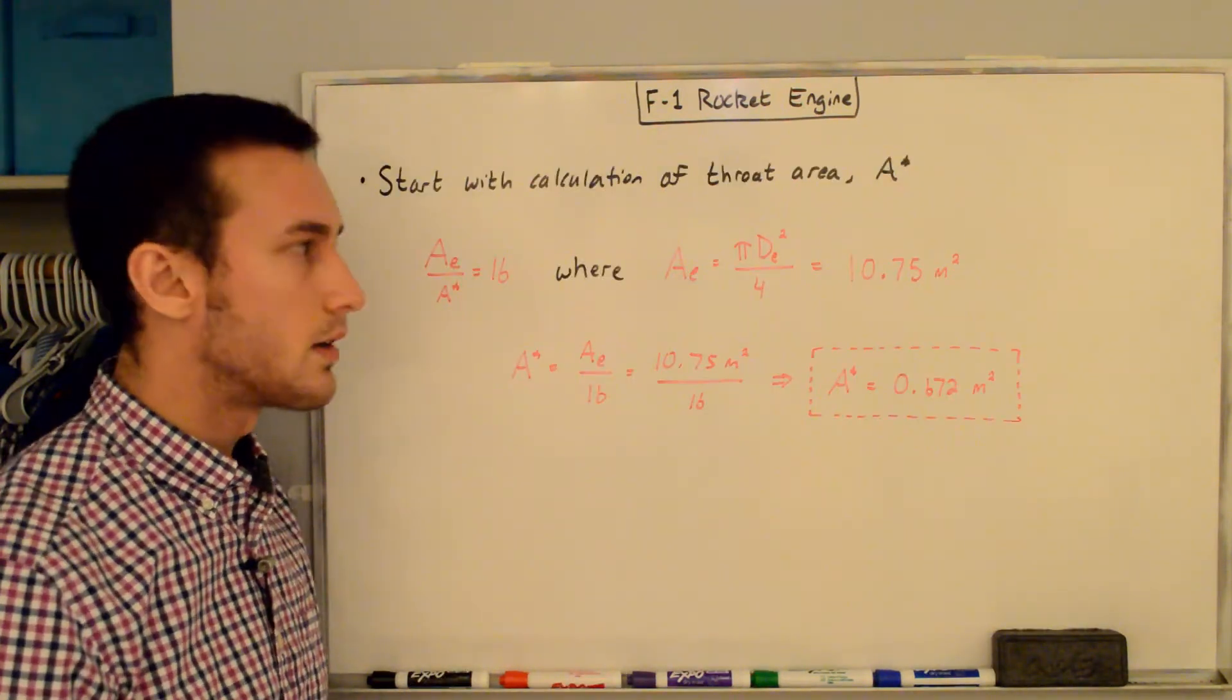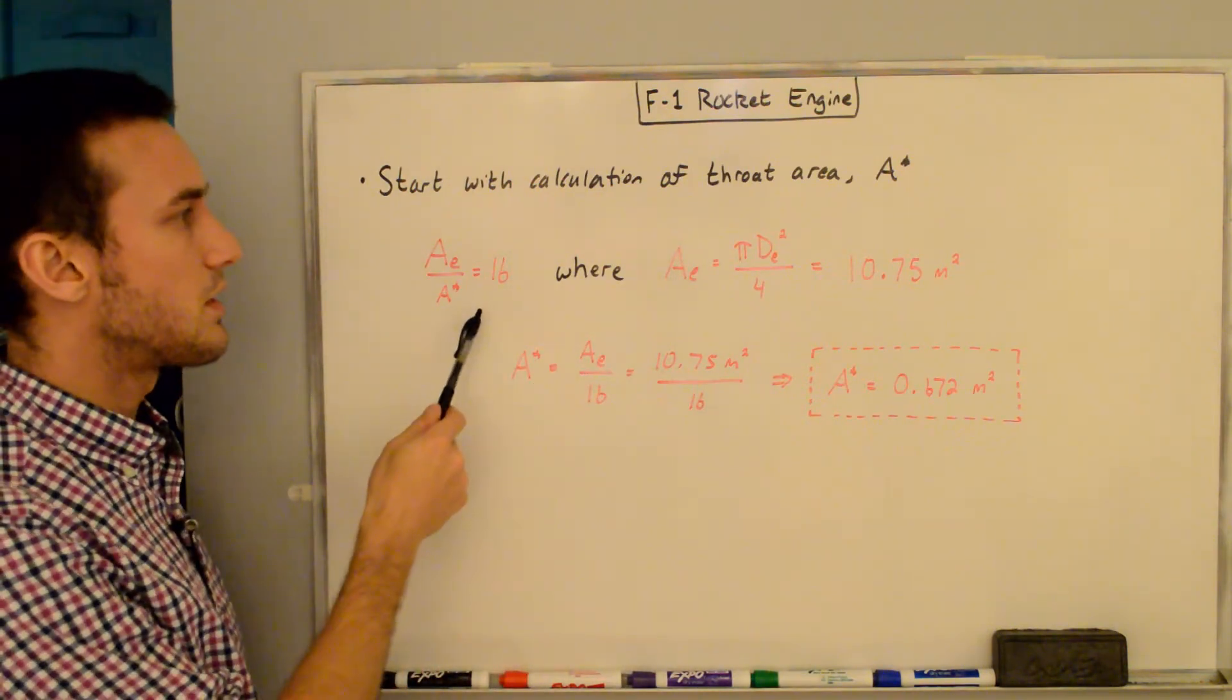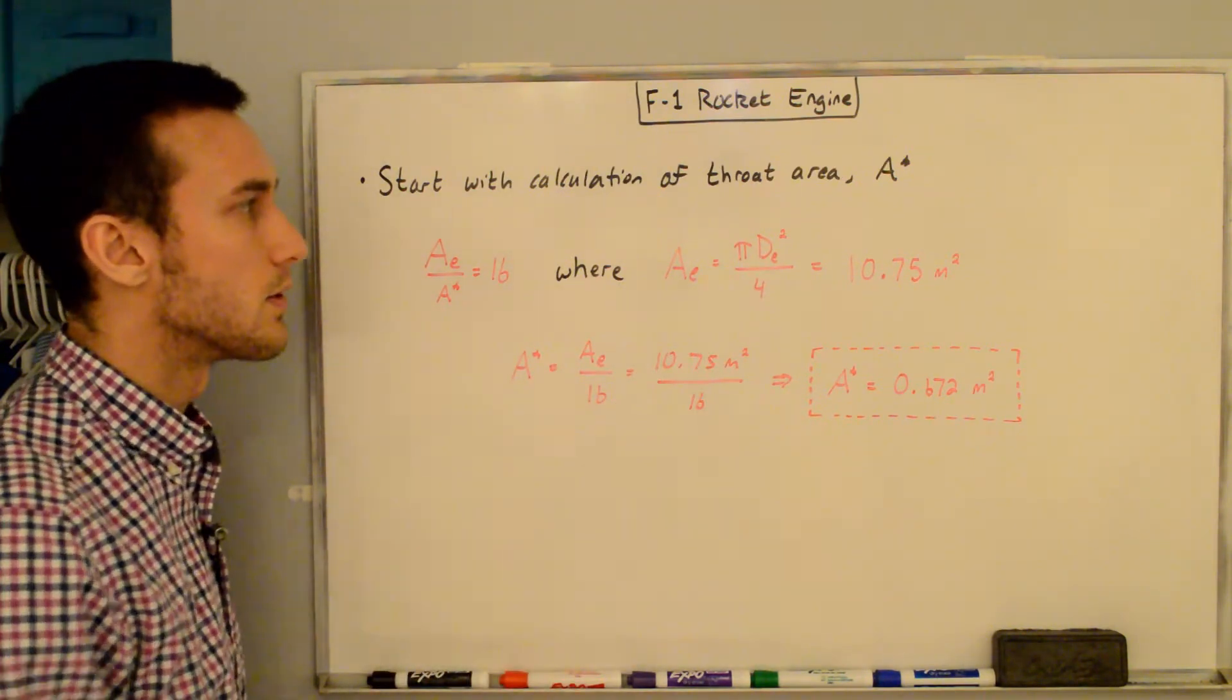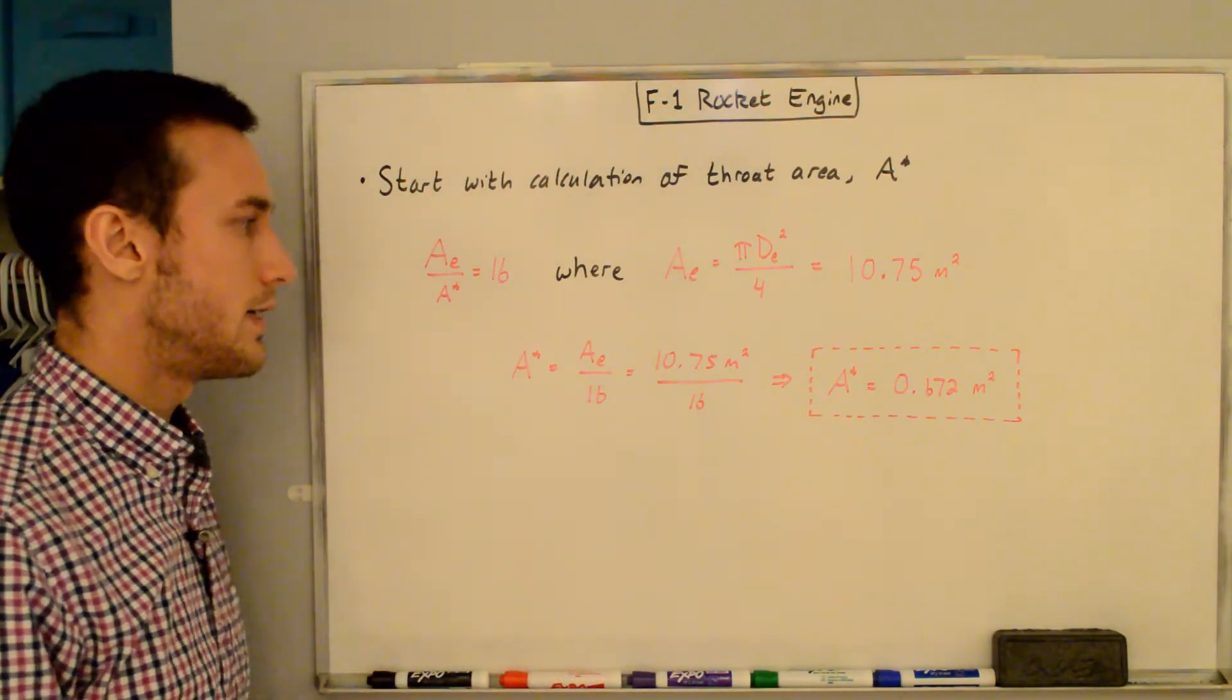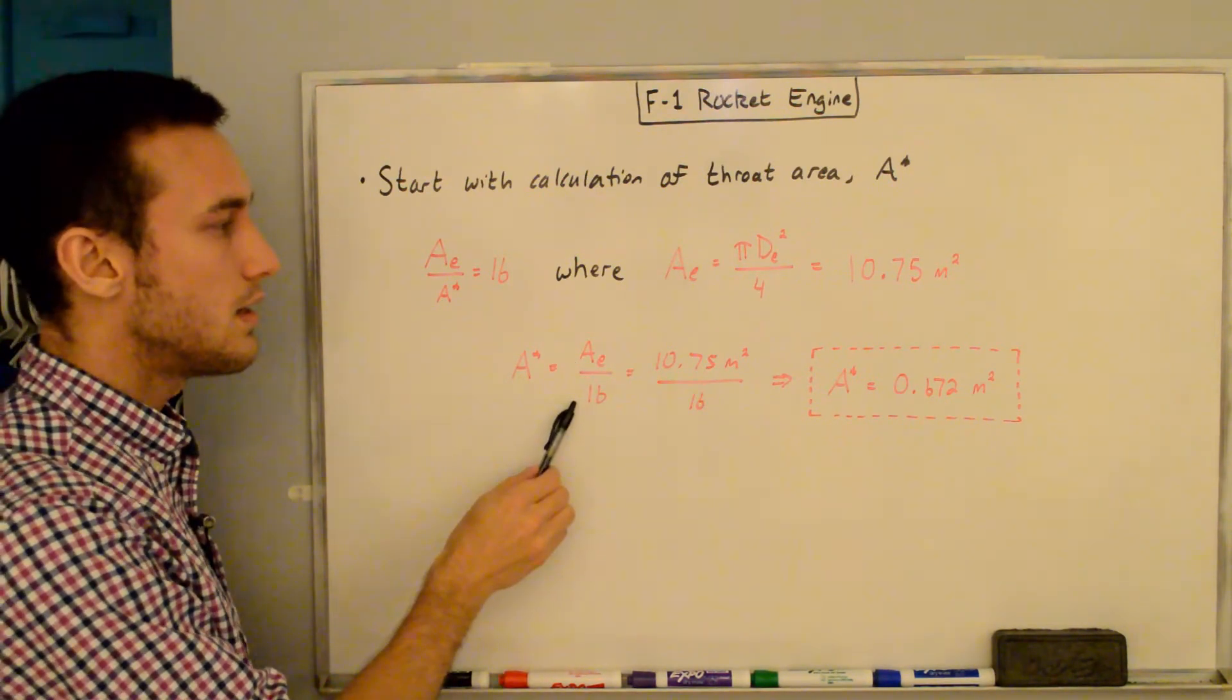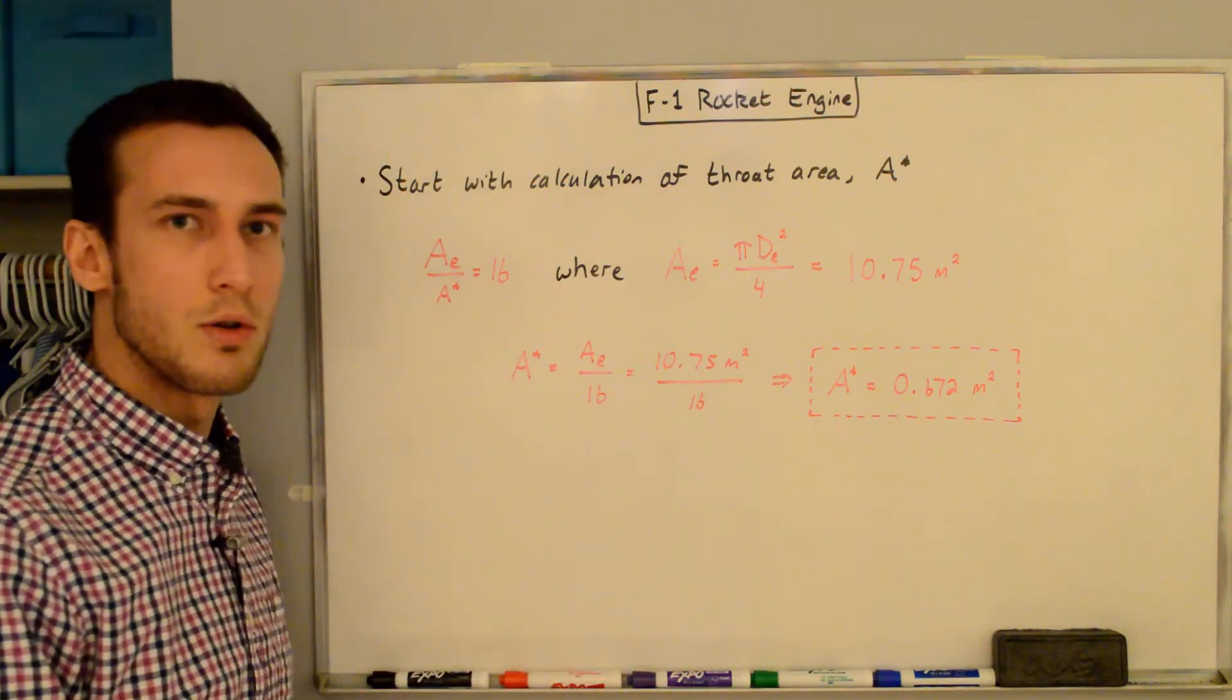First we'll start with the calculation of the throat area, A star. The area ratio equals 16, where the exit area equals pi d squared over four, with d as the exit diameter. Plugging in 3.7 meters gives 10.75 meters squared for the exit area. Rearranging, the throat area equals the exit area over 16, which gives us 0.672 meters squared.